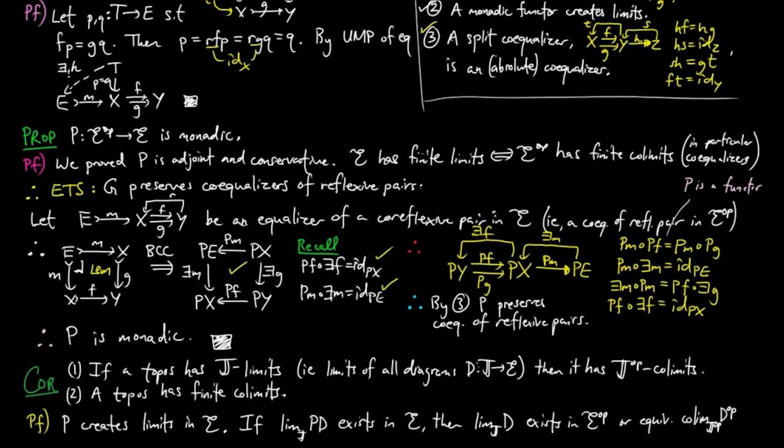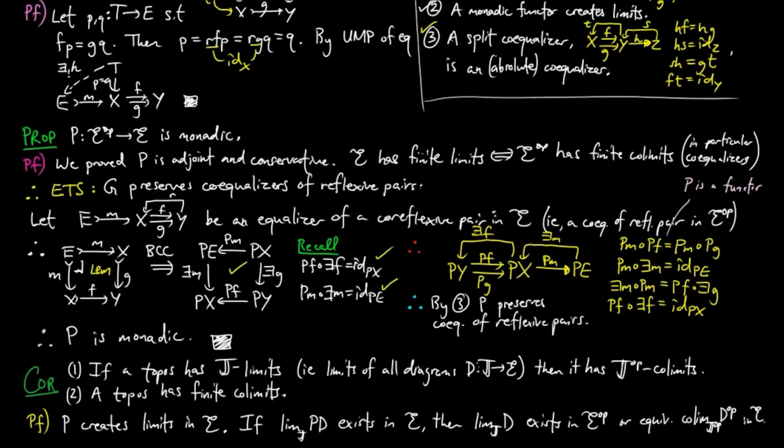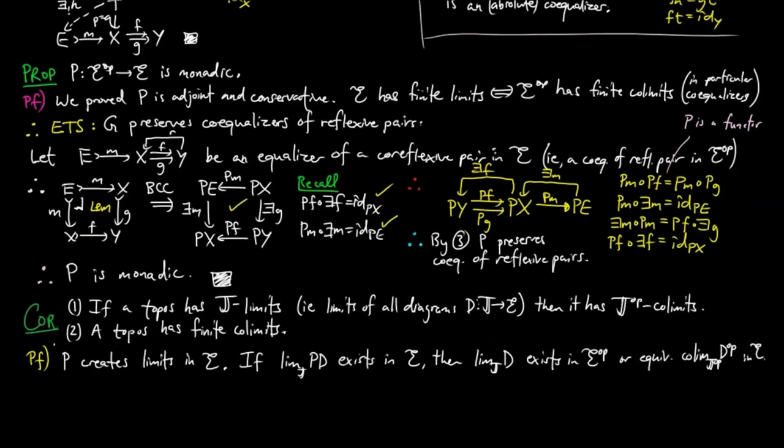Or equivalently, the co-limit of D-op exists in E, showing that E has all co-limits of diagrams of shape J-op.